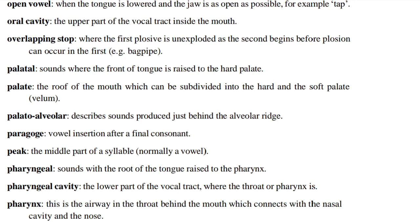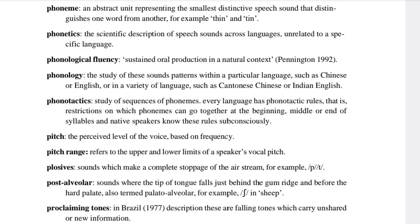Paragoge: vowel insertion after a final consonant. Peak: the middle part of a syllable, normally a vowel. Pharyngeal: sounds with the root of the tongue raised to the pharynx. Pharyngeal cavity: the lower part of the vocal tract where the throat or pharynx is. Pharynx: this is the airway in the throat behind the mouth which connects with the nasal cavity and the nose.